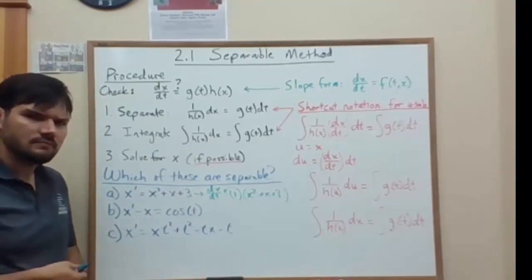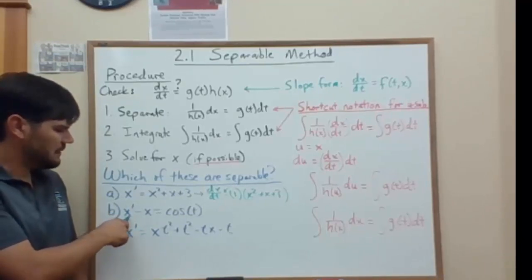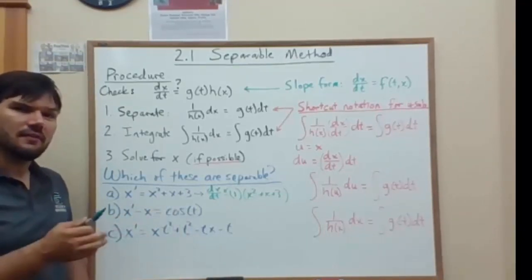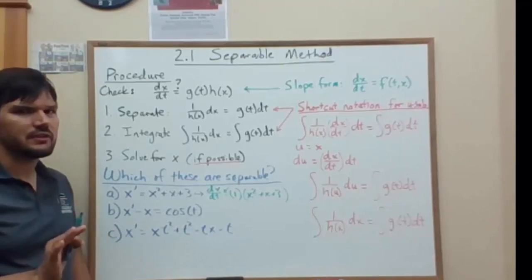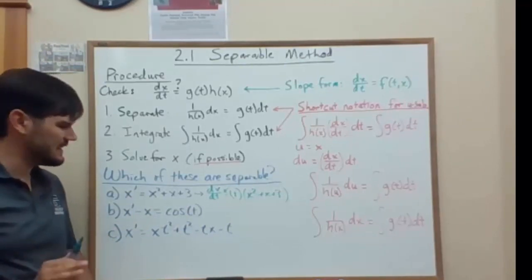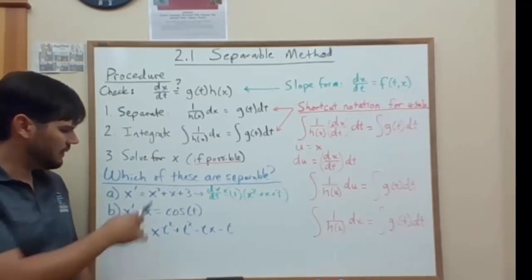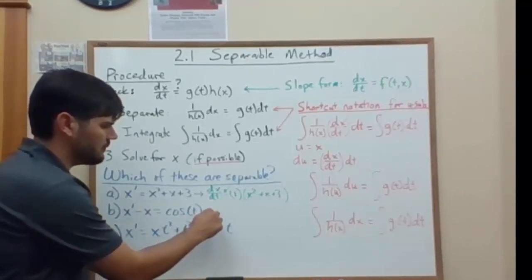Now the next one. We have x prime minus x equals cosine of t. Now this is a dangerous equation because it looks like it's separated, but it's not written in slope form. So let's first write it in slope form.